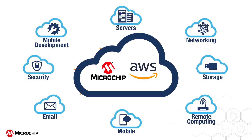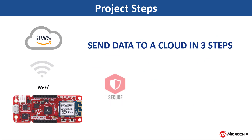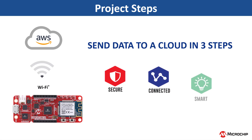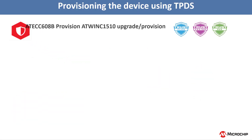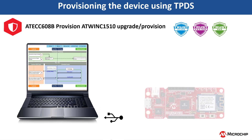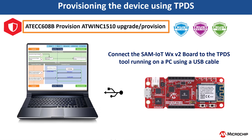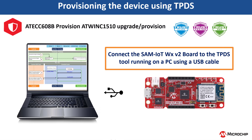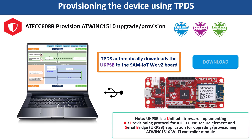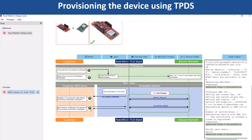You can send data to the AWS cloud in three simple steps pertaining to secure, connected, and smart product offerings. To securely register the device to the AWS IoT platform, the ATECC 608B module on the board must be provisioned using the TPDS. Connect the SAM IoT WX V2 board to the TPDS tool running on the PC using a USB cable. TPDS automatically downloads the firmware to the board. Run the following use case steps to install certificates on the device and register it with the selected cloud platform.